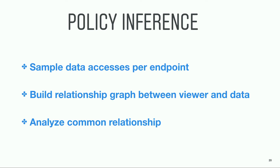Now every new feature is built on top of the privacy framework, and every new object type added comes with a privacy rule. But Instagram is big now — we have hundreds of data types, many teams, and a large code base. Having a centralized effort from the data privacy team means we know the privacy framework really well, but we don't really know the usage of each object type. Although we don't understand the exact business logic behind all data types, we know all the data access per endpoint. So we could sample data access per endpoint and build a relationship graph between the viewer and data.